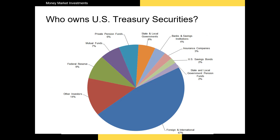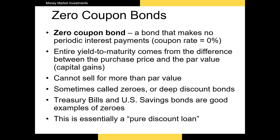Let's take a look at who owns U.S. treasury debt. Notice that about half of U.S. T-bills, T-notes, and T-bonds are owned by U.S. investors. A sizable percentage is owned by institutions like the Federal Reserve and state and local governments. Foreign governments also own a large number of treasury securities. U.S. T-bills are a type of zero-coupon bond.